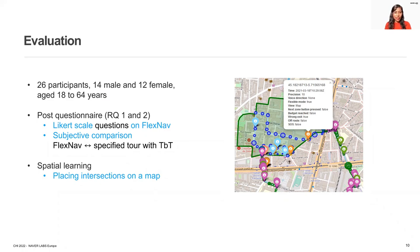To answer our first and second research questions, we collected responses to Likert-scale questions on the appreciation of our FlexNav concept and a subjective comparison questionnaire comparing our FlexNav tour with a fully turn-by-turn-based system. Additionally, participants provided verbal explanations for their given ratings. To answer our third research question about spatial learning of the environment, we asked participants to place 12 intersections on a printed map. These intersections were shown as 360-degree Google Street View images on a laptop, selected based on the participants' running trace from our monitoring interface.